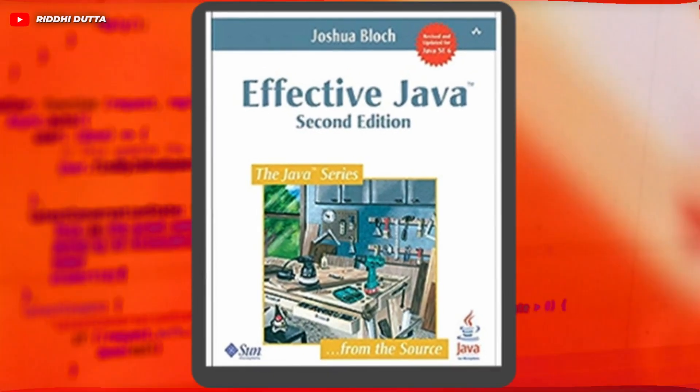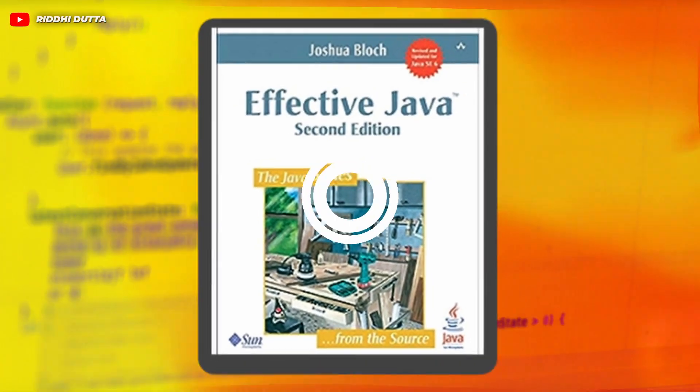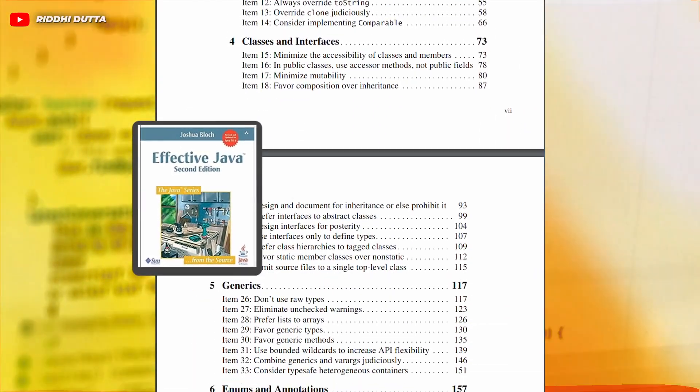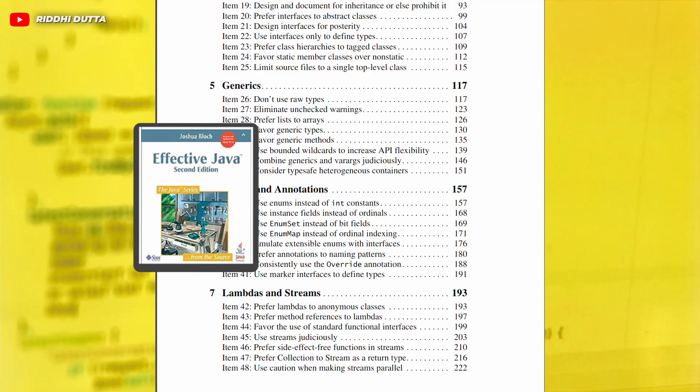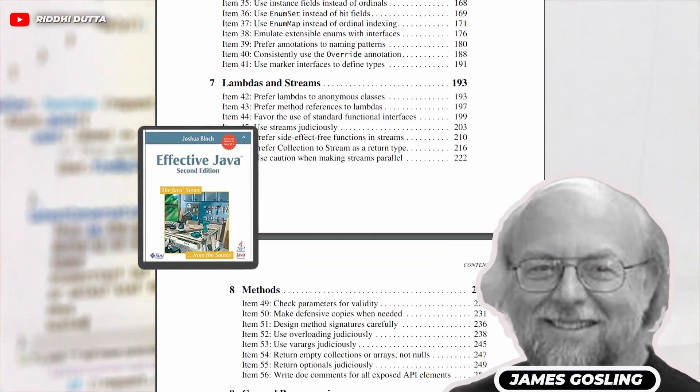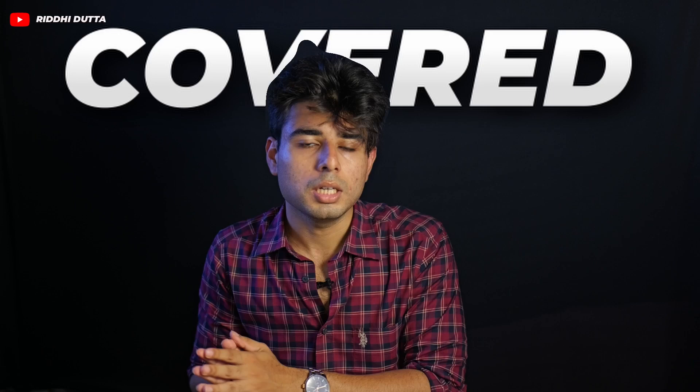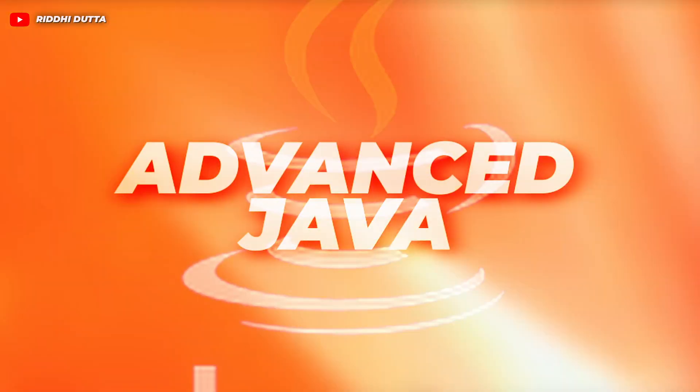Another book you can follow is Effective Java by Joshua Bloch, which basically tells you about the best practices — written by the founder of Java, James Gosling, himself. Once this is done and you have your Core Java covered, let's talk about some of the resources that would be helpful for learning advanced Java.